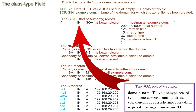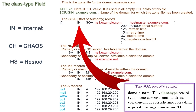This field defines the class type of this record. There are three classes: IN, CH, and HS. Currently, only the IN class is used. The CH and HS classes were used when the internet was an in-house project in the MIT lab. CH stands for Chaos — it is an MIT LAN protocol. HS stands for Hesiod, an information service used at MIT. IN stands for the internet that we use today.